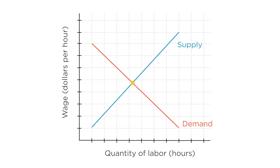Here where the two curves intersect is the market equilibrium. At this point, firms are happy to pay this wage for this many hours of labor, and workers are happy to supply this many hours of labor at this wage. And just like in our other supply and demand models, shifts in demand or supply will change the equilibrium.